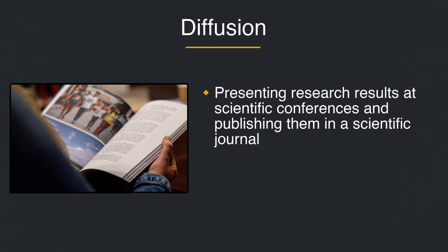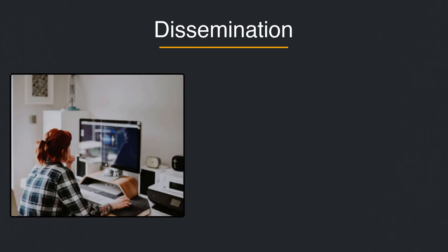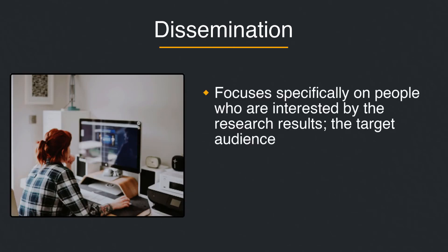More and more researchers are asked to do different types of outreach, especially making their findings accessible to the general public when their research is funded by public funds. Dissemination focuses specifically on people who are interested by the research results — in other words, the target audience. For example, study results can be translated into a user guide for patients.